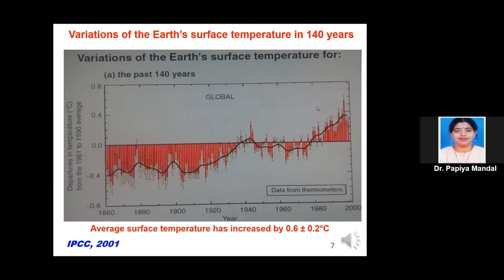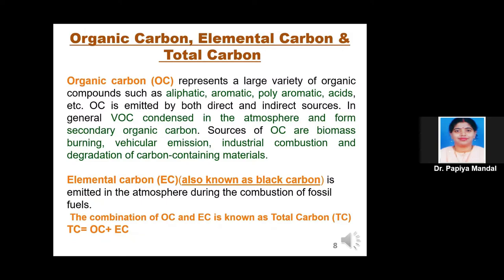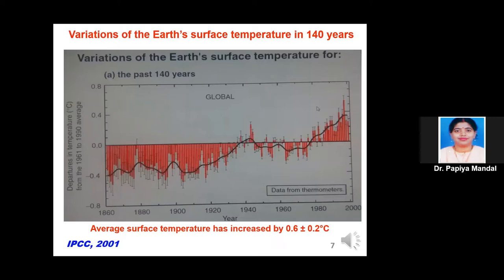It has been found that Earth's surface temperature is increasing day by day. This slide shows the surface temperature profile of Earth over 140 years. It was observed that the average surface temperature has increased by 0.6 ± 0.2 degrees centigrade over 140 years. That increase in temperature was mainly observed during the last 20 years, from 1980 to 2000. It was observed that due to the emission of large quantities of aerosol, directly or indirectly, surface temperature is increasing.